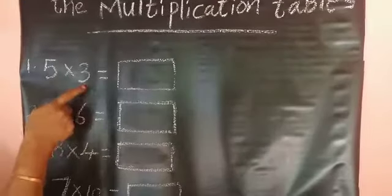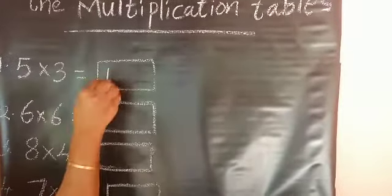Or use the multiplication table of 5: 1 into 5 is equal to 5, 2 into 5 is equal to 10, 3 into 5 is equal to 15. Next, 5 into 6: 6 into 6 is equal to 36. Next, 7 into 10 is equal to 70. 3 into 4 is equal to 12.